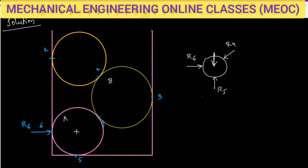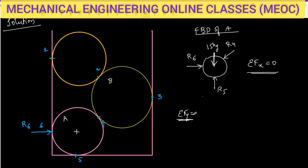We cannot apply Lame's theorem here because there are 4 forces. We can apply sigma Fx = 0 and sigma Fy = 0, giving us 2 equations. However, of the 4 forces acting on cylinder A, we do not know 3 of them: R4, R5, and R6. From 2 equations we cannot find 3 unknowns, so we must find at least one of the other two first. Starting with the FBD of A alone is not immediately helpful.